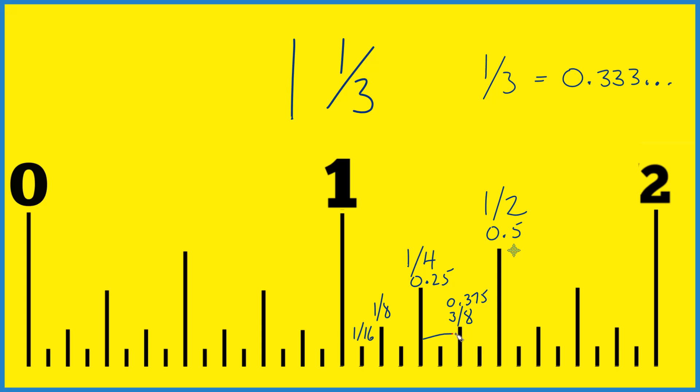So we know it's somewhere in this space right here. So we could count sixteenths. Go 1, 2, 3, 4, right there is 5 sixteenths. And if you divide 5 by 16, things are getting crowded. So let's put that right up here.